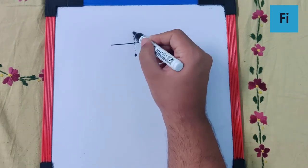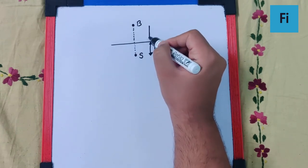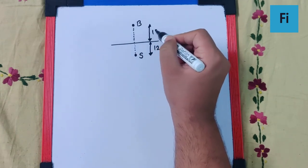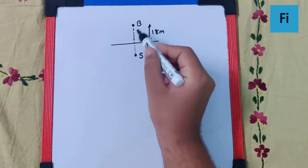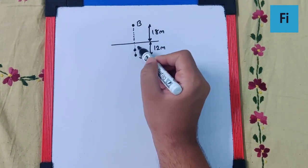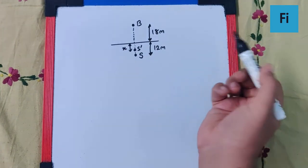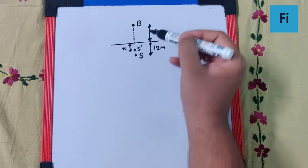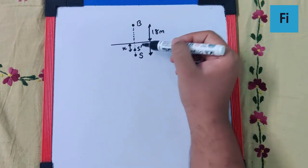And the bird is at a height of 18 meters. Now they have asked us: the swimmer will appear, say S', at what depth from the surface? So this 18 has nothing to do with it, correct.